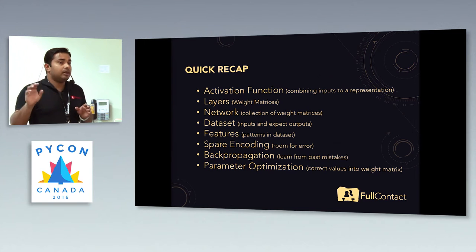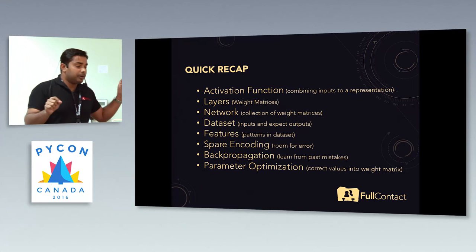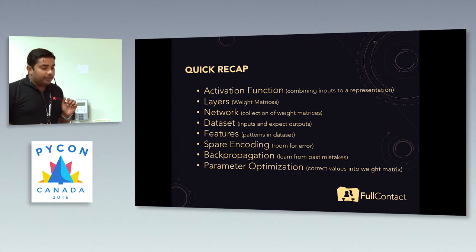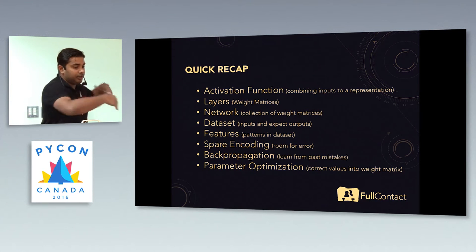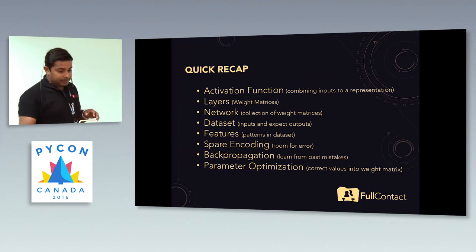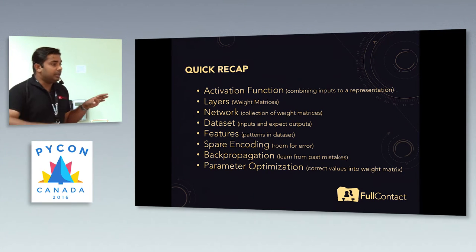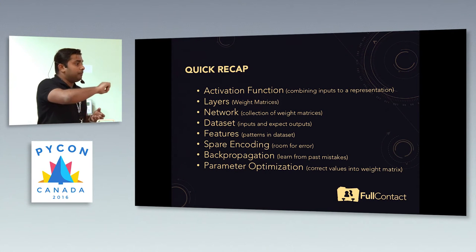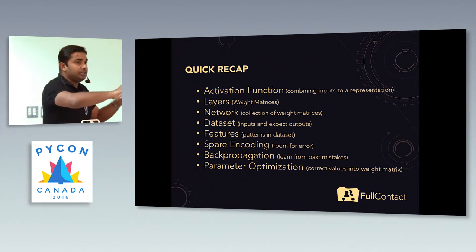Each of the layers is a separate weight matrix. Weight is the value with which each input is multiplied. A network is a collection of layers — layer one, layer two, layer three, and so on. We have multiple layers. We also have the dataset, which is the input and the expected output. We feed this data into the weight matrices we have defined and ask it to predict.